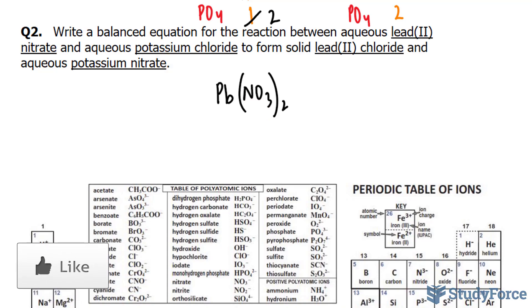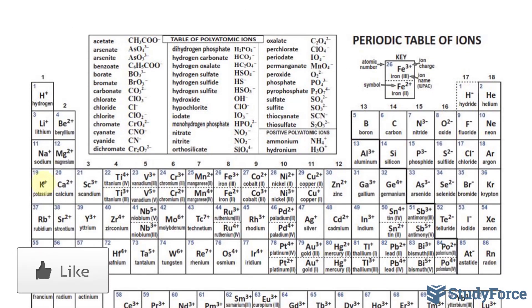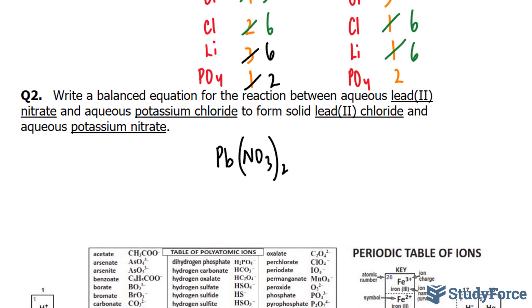Moving on to potassium chloride, potassium is a metal and has the chemical symbol K. So we have KCl, K has a charge of 1 plus, Cl has a charge of 1 minus. Therefore, this is the formula for potassium chloride.